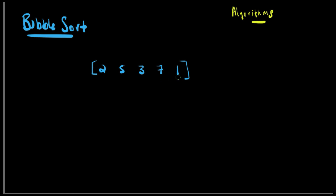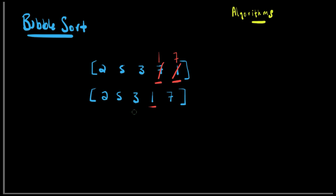We're going to start from the right, the first two numbers. So one and seven — is one less than seven? Yes. So we're going to cross that: one becomes seven, seven becomes one. Then we're going to go down and make a new array: two, five, three, one, and seven. Now we're going to go over one and compare one and three. Is one less than three? Yes. So one becomes three, three becomes one.